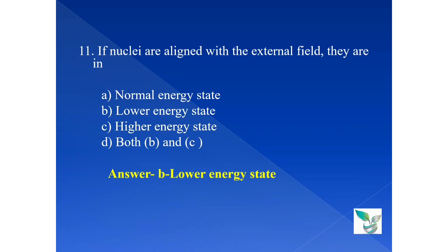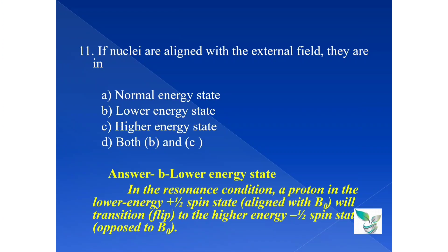The lower energy state nuclei will be aligned along with the main magnetic field, and the higher energy nuclei will be anti-parallel. In the resonance condition, a proton in the low energy state will be aligned with B0. B0 is the main magnetic field. The proton will transition, that is flip, to the higher energy state, opposite to the B0. So low energy is aligned along the main magnetic field and high energy state is against the magnetic field, anti-parallel.